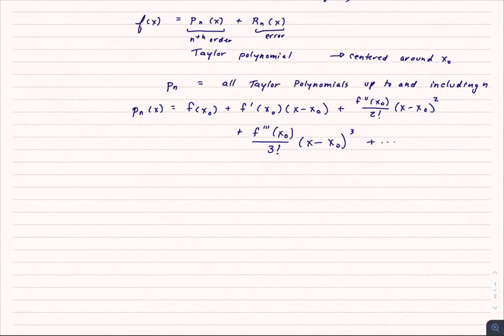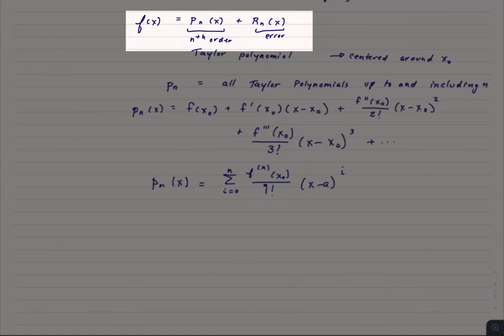I could also write this as a summation. That summation for the Taylor polynomial. Again, remember, we're not saying the polynomial is the function. It's the function and if we added this error term, this remainder,